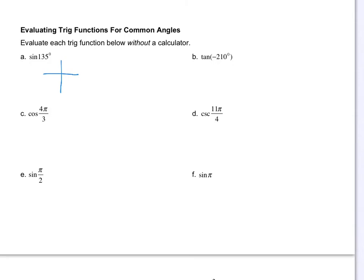Quadrant two — the angle 135 puts us on the unit circle at the point negative square root of 2 over 2, positive square root of 2 over 2. Sine references the y-coordinate, so the answer is positive square root 2 over 2. Sine represents the y-coordinate, so we're just matching these to the unit circle. Because it says without a calculator, that's your dead giveaway that these angles have to be coterminal with our known unit circle angles — the 16 points around the unit circle we've asked you to memorize.